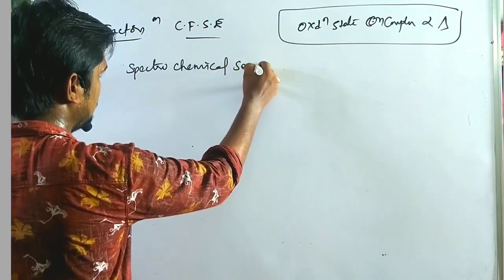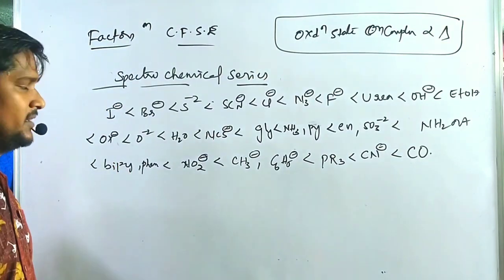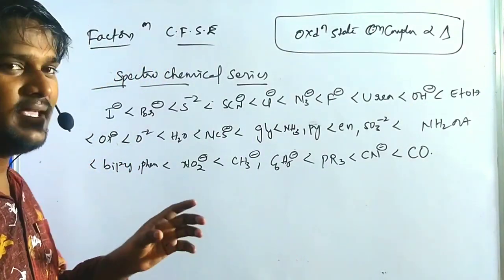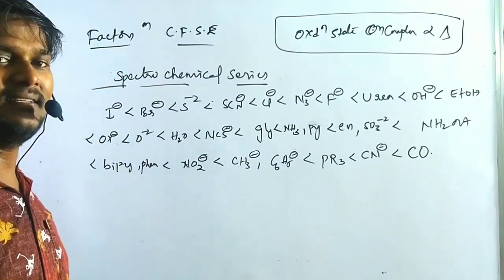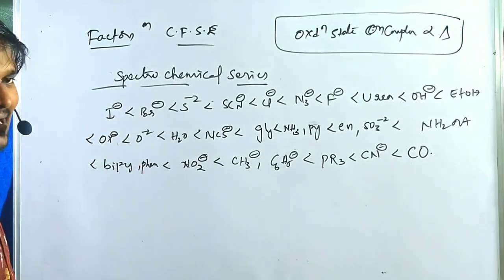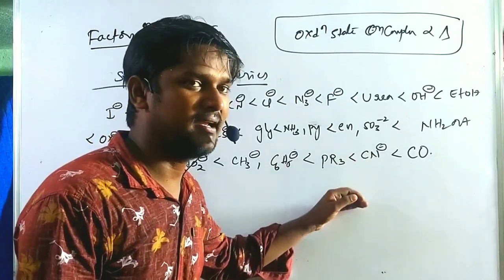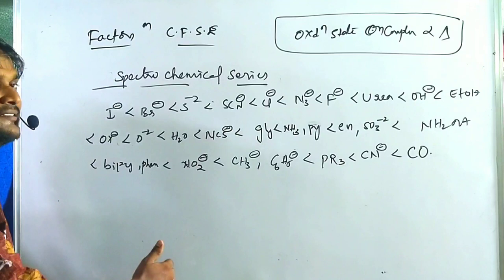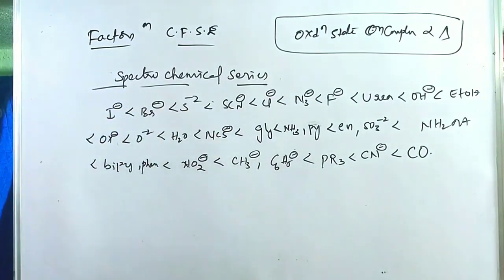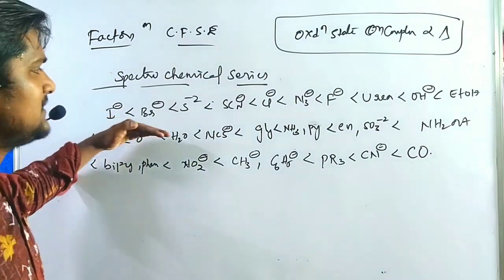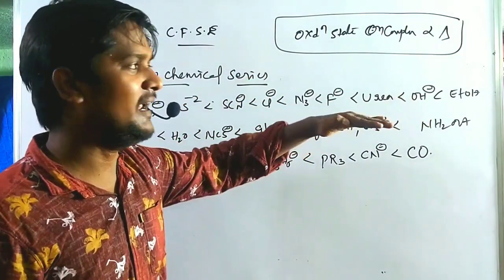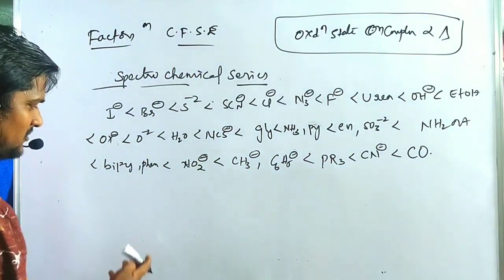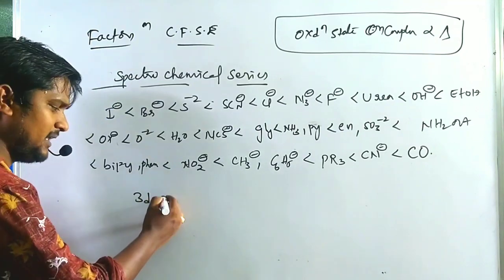In the spectrochemical series, ligands are arranged based on their splitting energy values. Iodide (I⁻) has the least splitting energy, while carbonyls (CO) and cyanide (CN⁻) have the highest. The pi acceptor ligands give the highest splitting, the pi donor halides give the least, and oxygen pi donors like H₂O fall in the middle range.